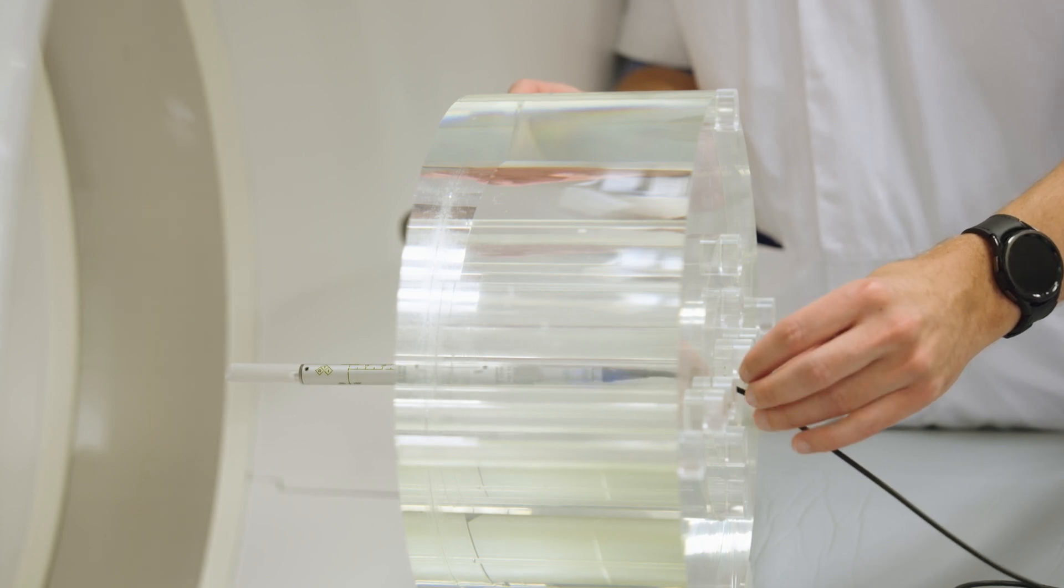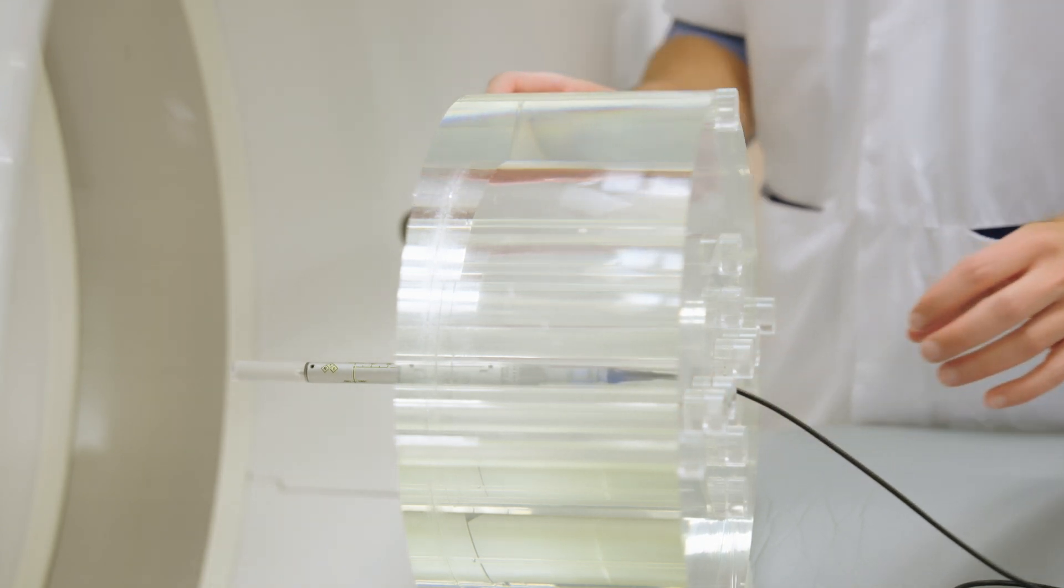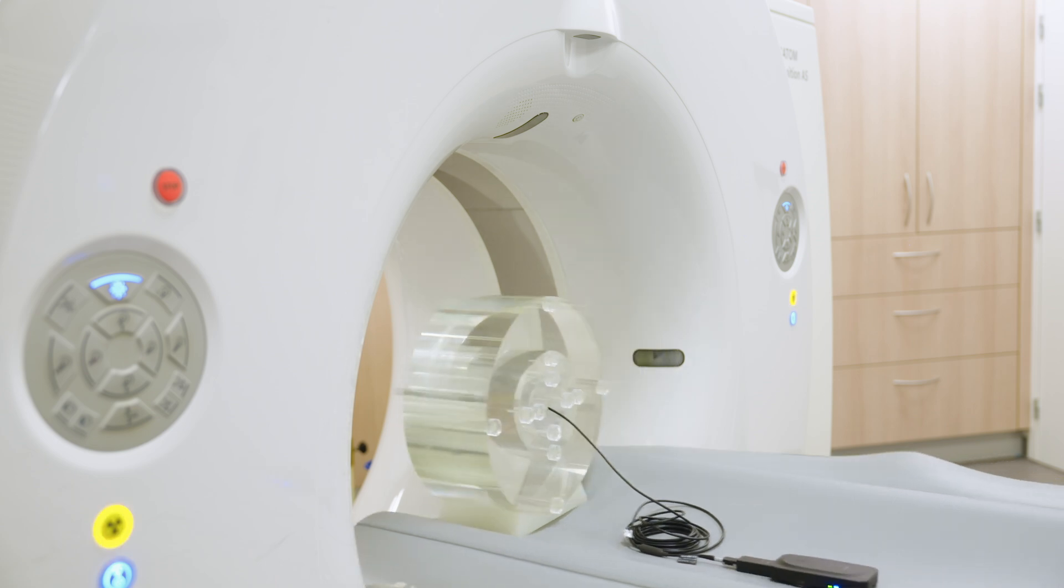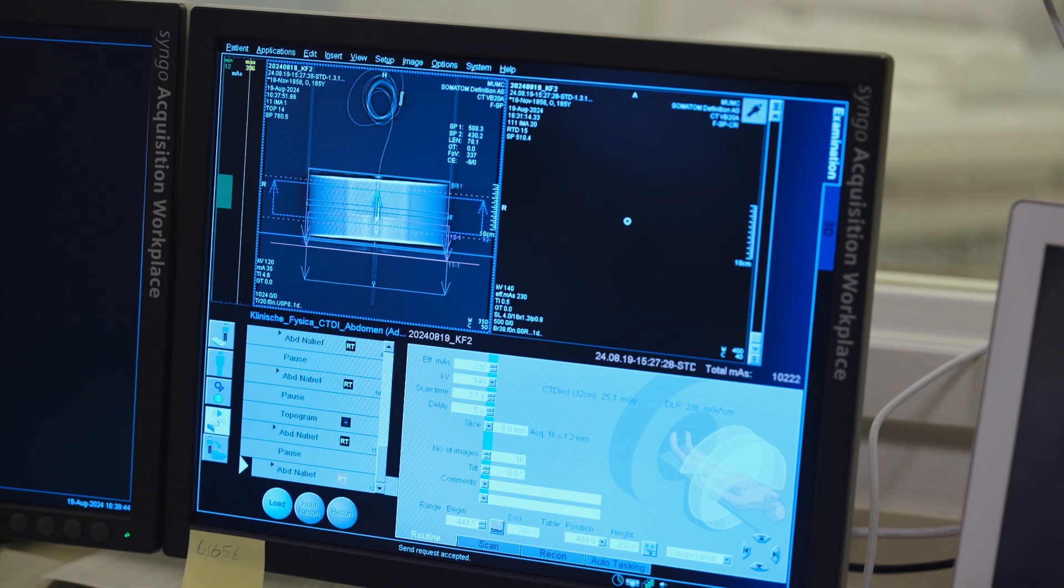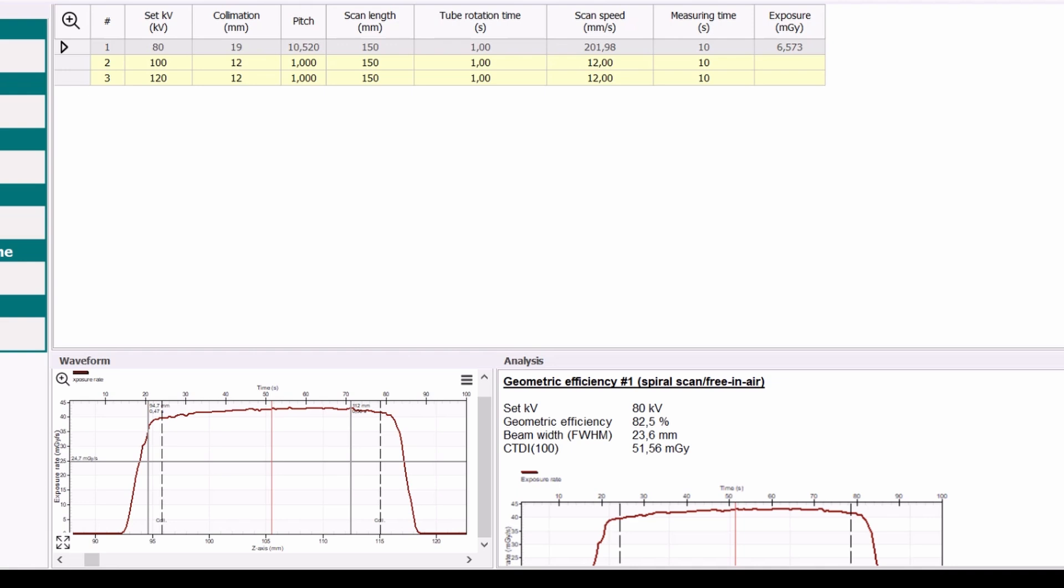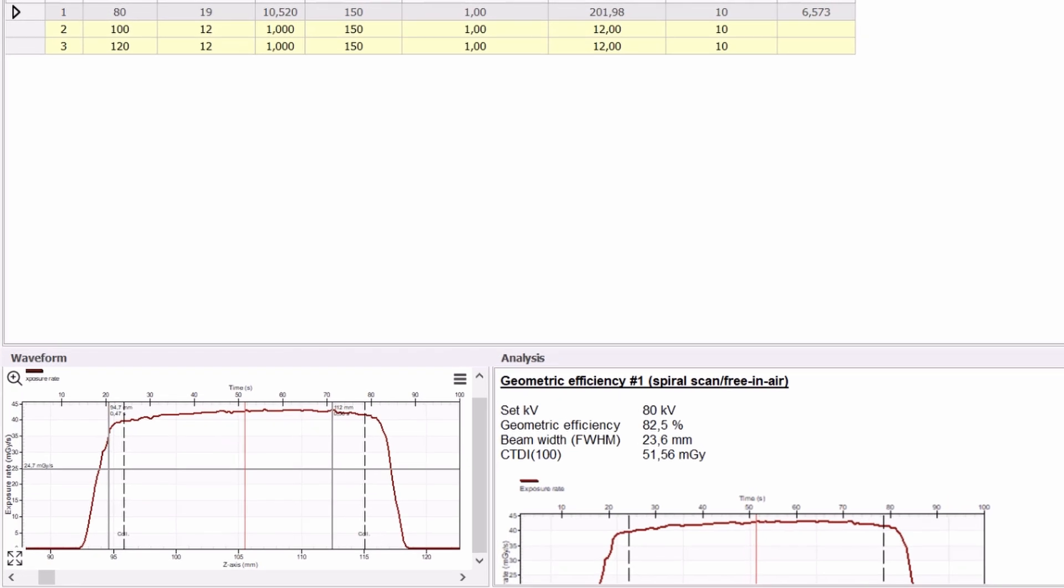The CT dose profiler can also be scanned free in air by extending the point dose detector beyond the CTDI phantom or by using the RTI Loni mover. Ocean will display the measured CT beam width and the geometric efficiency of the beam.